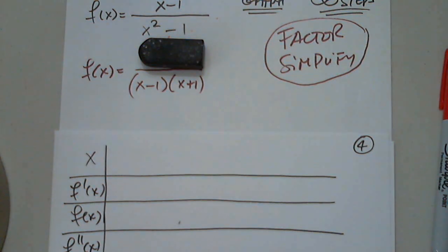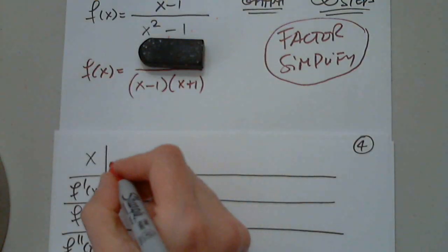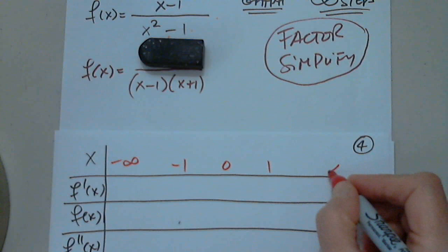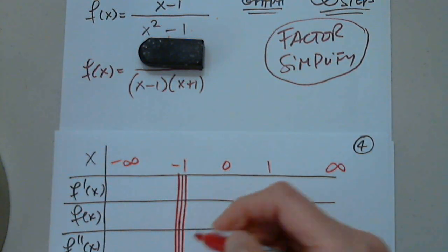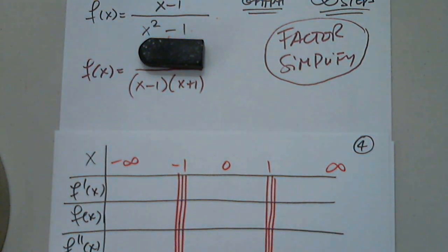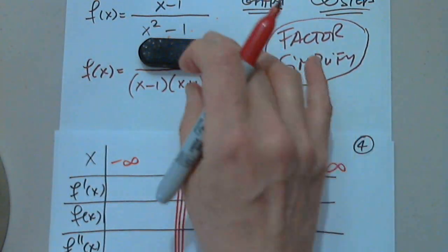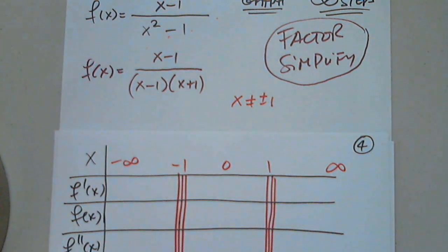x minus 1 times x plus 1. Good. So now we do know the domain of this function. What is the domain? Negative infinity to negative 1, union negative 1 to 1, union 1 to infinity. Yes. In other words, x cannot be plus or minus 1. Awesome.